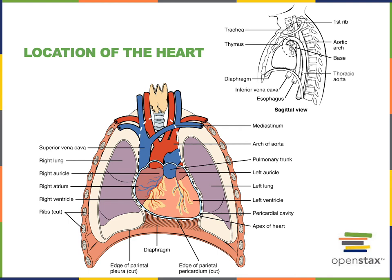The inferior chambers of the heart are called ventricles. There are two ventricles — a right and left ventricle — and the right ventricle is contacting the diaphragm along the inferior surface.